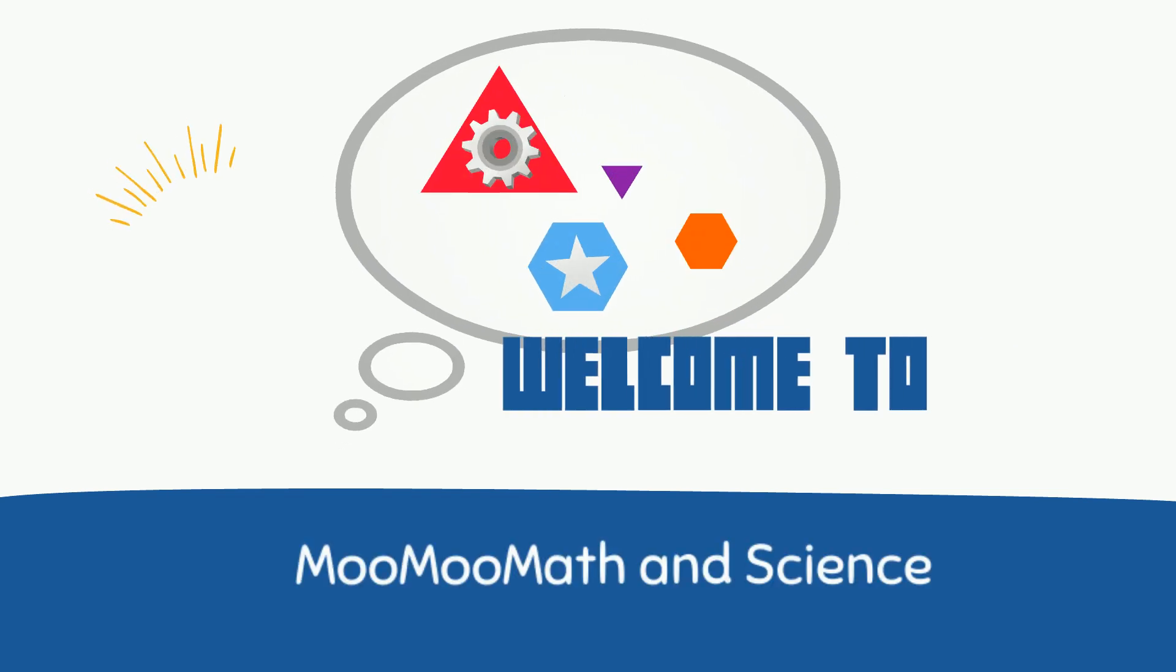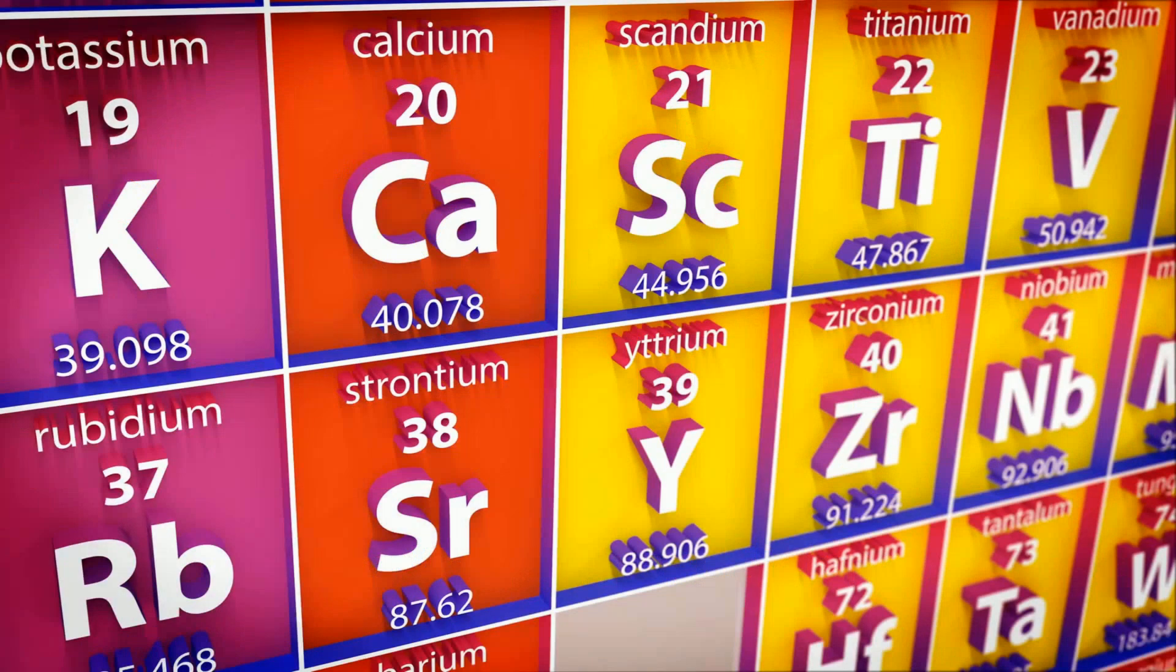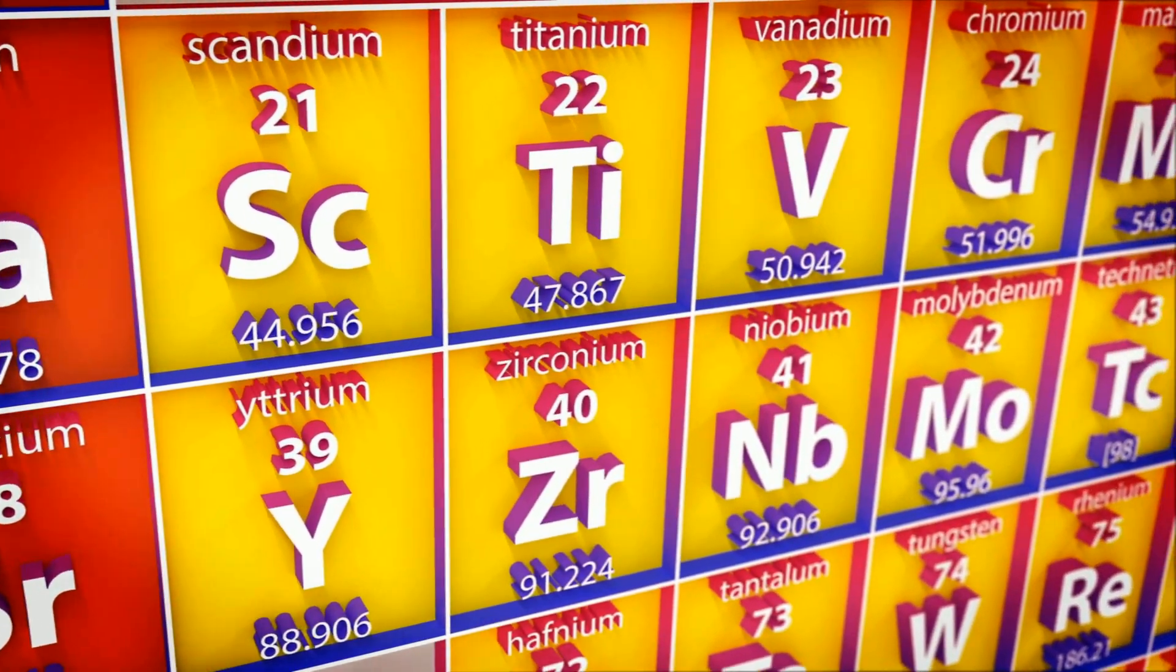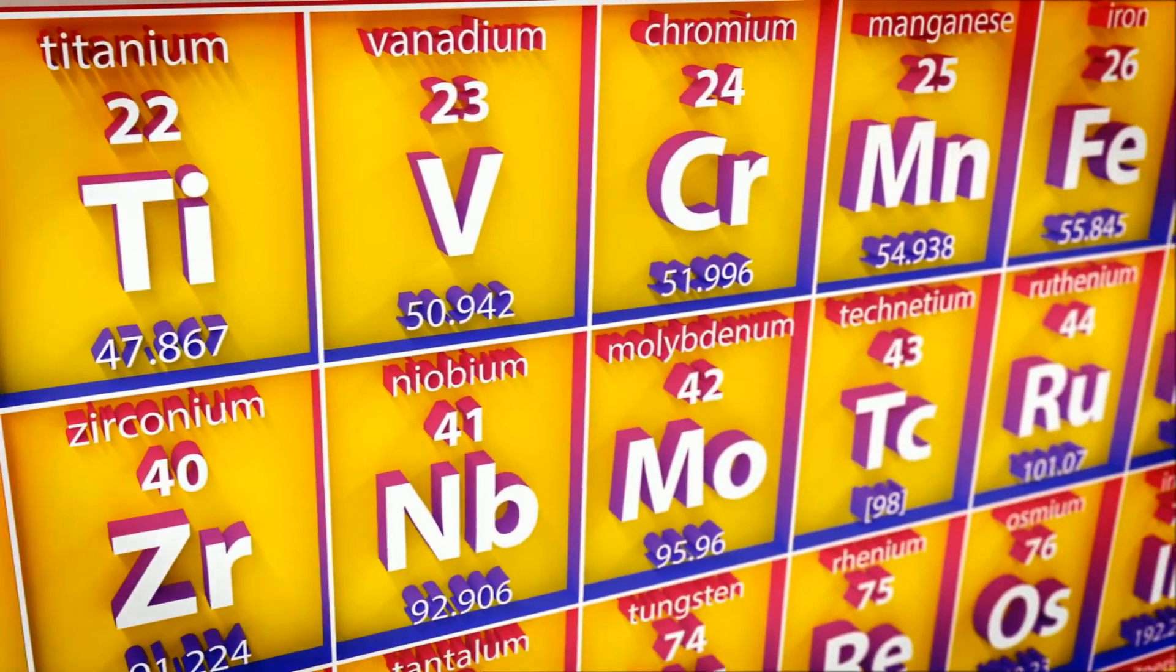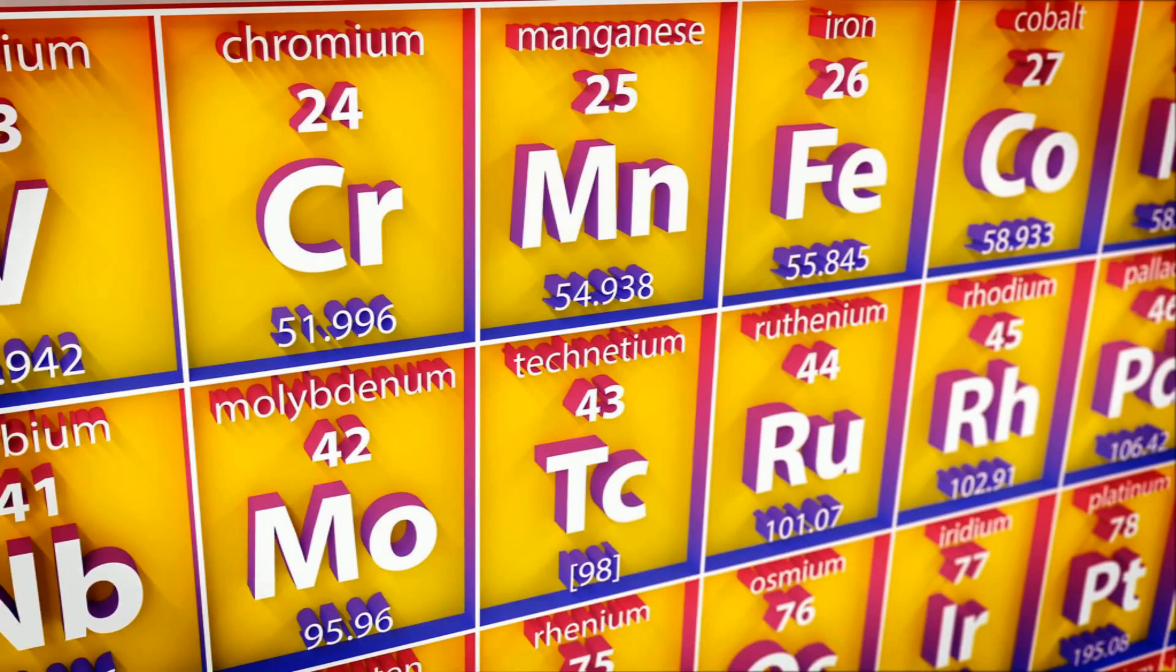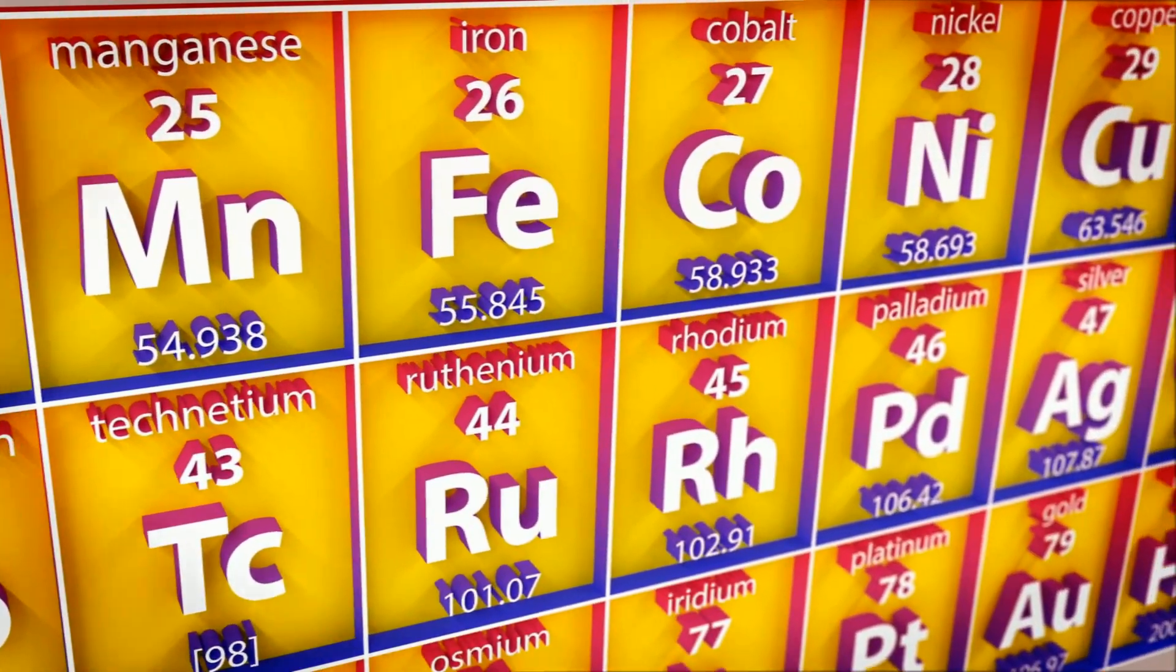Welcome to MooMooMath and Science. In this video, let's take a look at the Periodic Table. The Periodic Table is organized like a big grid. Each element is placed in a specific location based on its atomic structure.